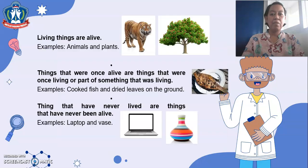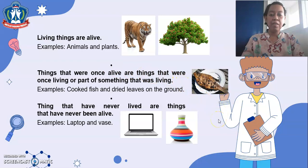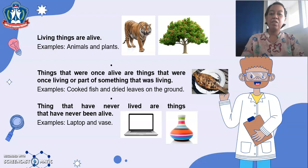Let's check the examples. Living things are alive — examples include animals and plants. Things that were once alive are part of something that was living. Examples include cooked fish and dried leaves on the ground. The third group is things that have never lived, with examples such as rocks and stones.